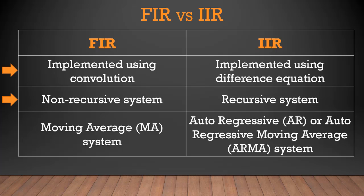Since in case of FIR filter there is no feedback, so there is no question of stability — it is always stable. The sixth and last property is regarding the naming convention of these two filters. FIR filter is termed as a moving average system because it is only computing the average of the input samples. Whereas the IIR filter can be autoregressive if it contains only denominator, or it can also be named as autoregressive moving average or ARMA system if it contains both numerator and denominator.